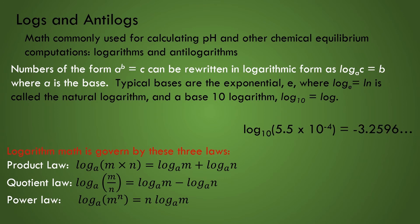Logarithmic math is pretty straightforward and is governed by the three laws written here. When calculating a logarithm using our calculators, the resulting number such as the base 10 log of 5.5 times 10 to the power of minus 4 would give us minus 3.2596 and so forth. On my calculator, the decimal values just keep going. Try it.